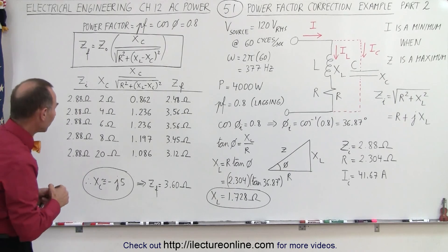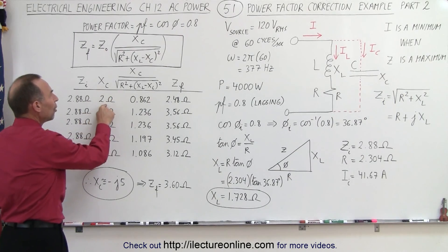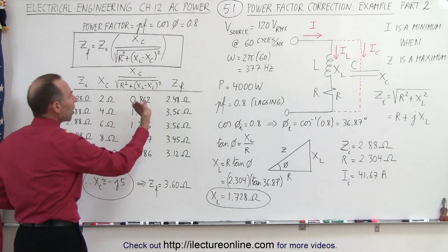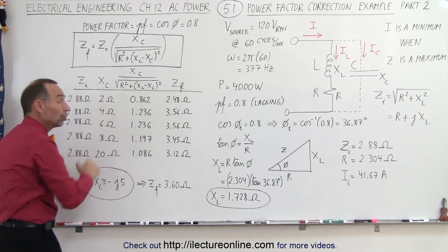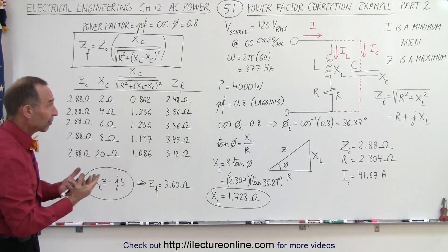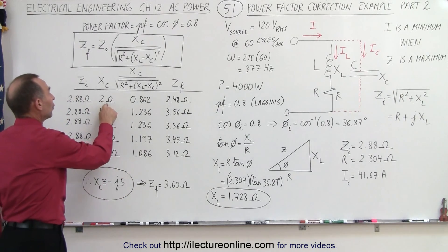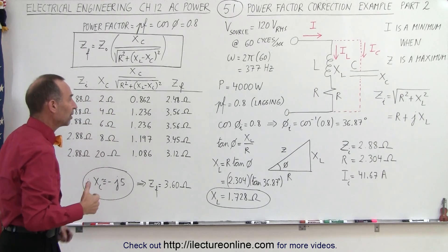So it turns out when we first try 2 ohms of capacitive reactance, we actually have a smaller power factor and therefore our impedance actually dropped. So that would not be a good value, it would not be a good capacitor that only provides 2 ohms of capacitive reactance.